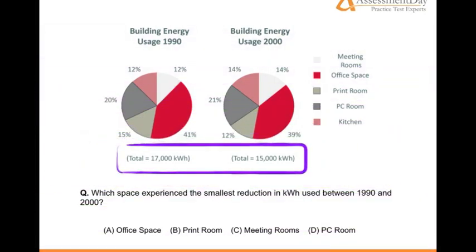Interestingly, the total kilowatt-hours used is given at the bottom of each pie chart. We will need to use this figure to calculate what the building energy usage was in each respective sector, as we are given percentages. Thus, we must do a straightforward calculation for each sector and each pie chart — that will take some time and some focus. We are given four potential answers.